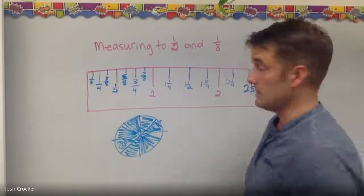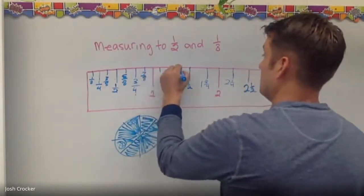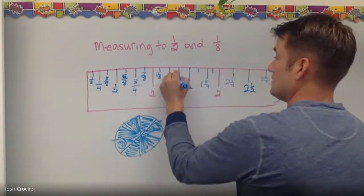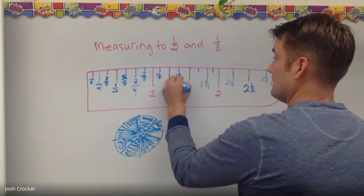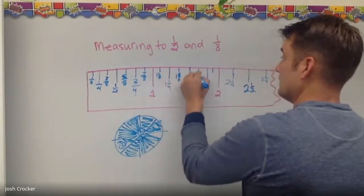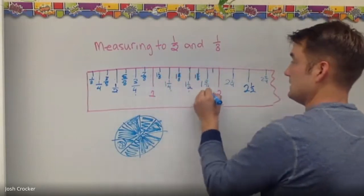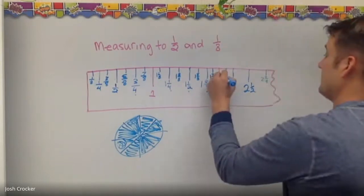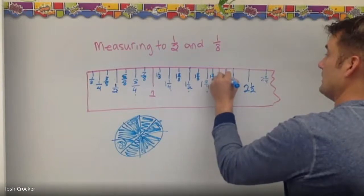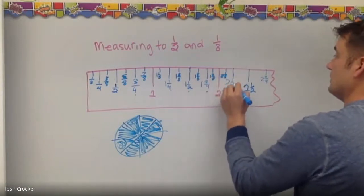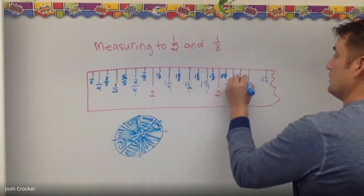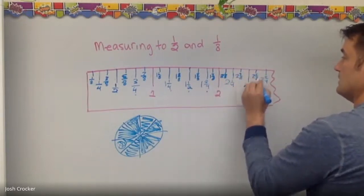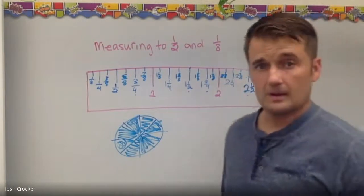Okay. So one and one eighth. One and two eighths. One and three eighths. One and four eighths. One and five eighths. Six eighths. One and seven eighths. Okay. Two and an eighth. Two and two eighths. Two and three eighths. Two and four eighths. Two and five eighths. And then my ruler breaks. Okay.